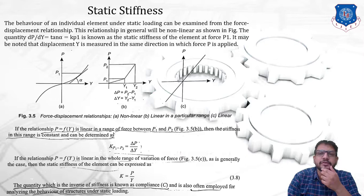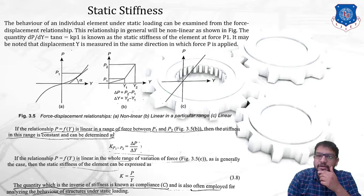For example, the weight of the tail stock, weight of the carriage on guide ways, and cutting forces — all of these can lead to bending or torsional loads. This can be avoided if a machine tool structure has high static stiffness. We are going to study the behavior of an individual element under static loading, which can be examined using a force-displacement relationship.